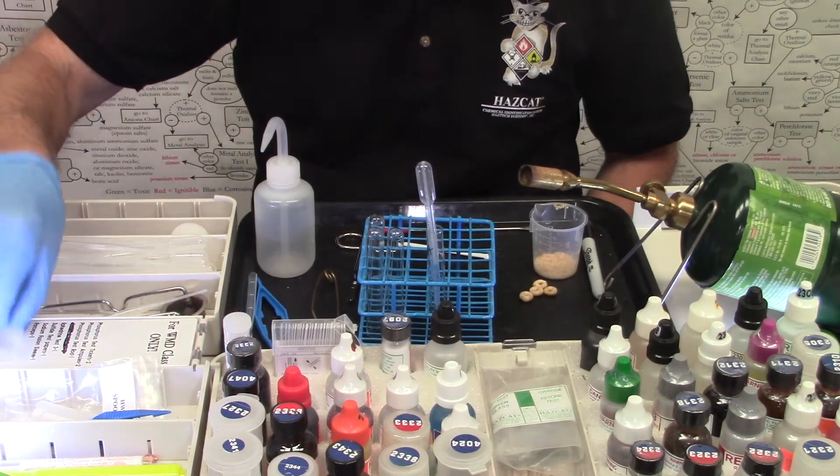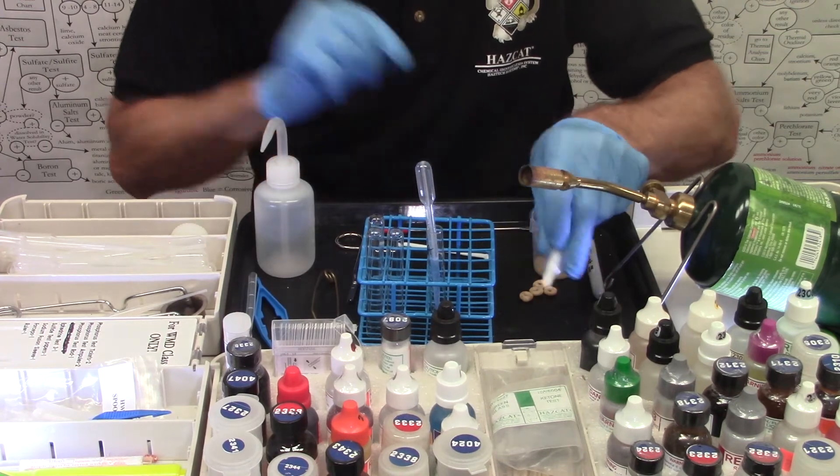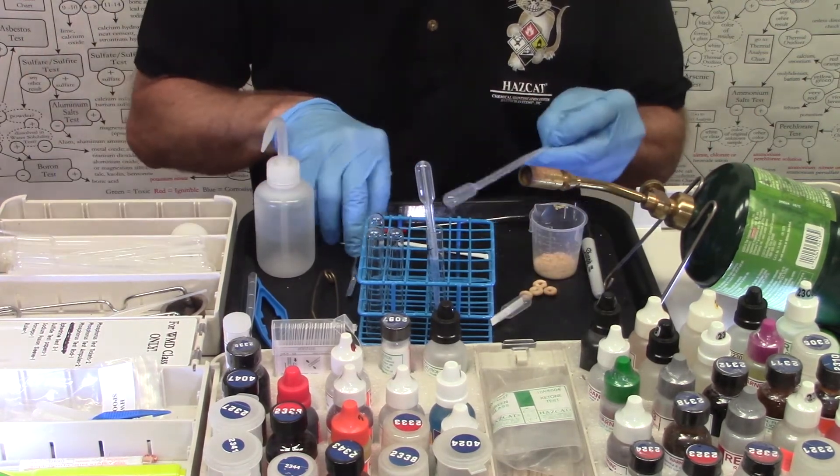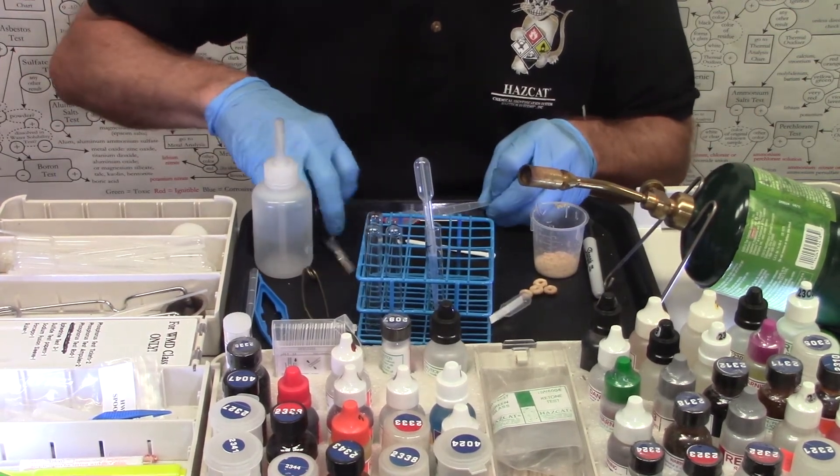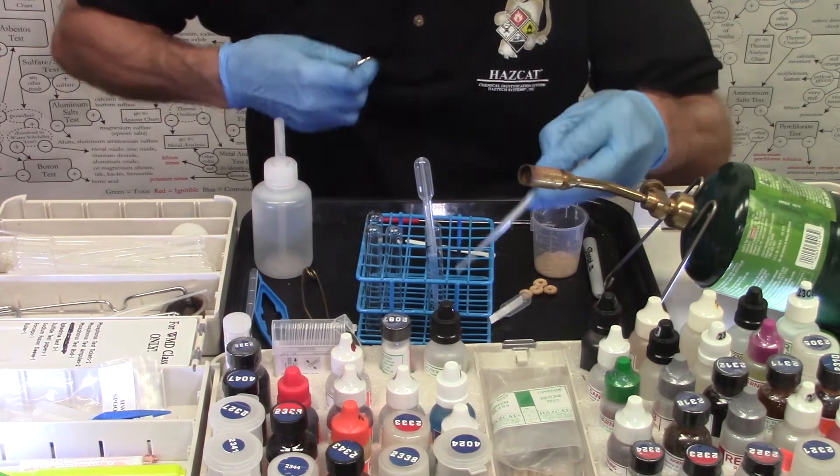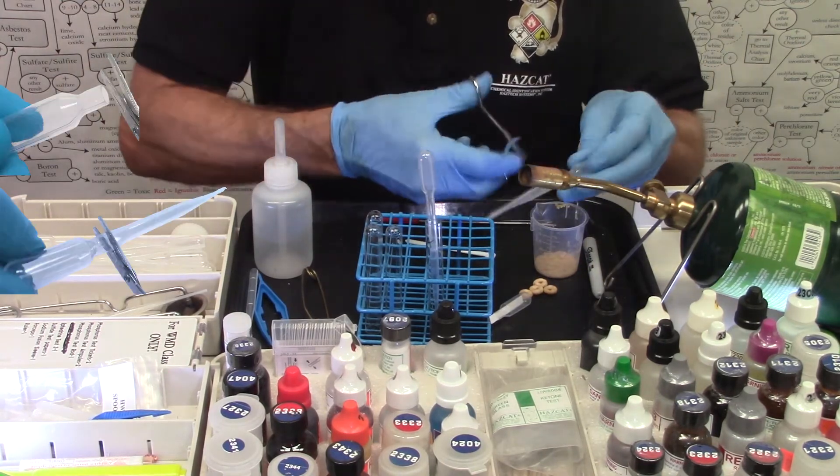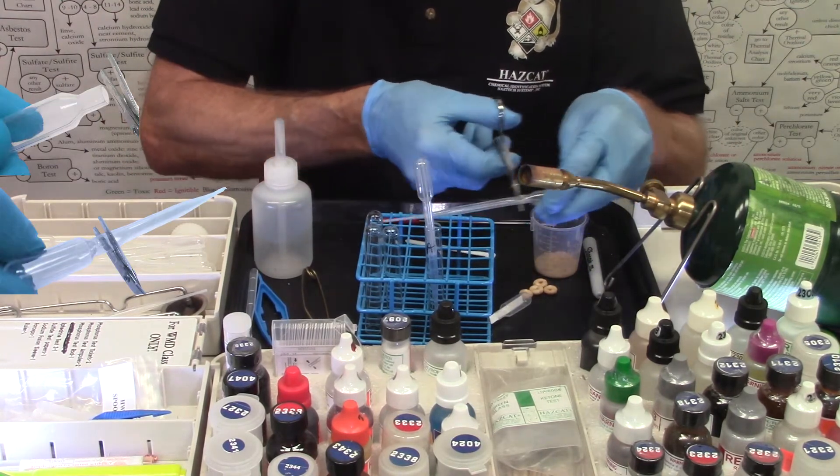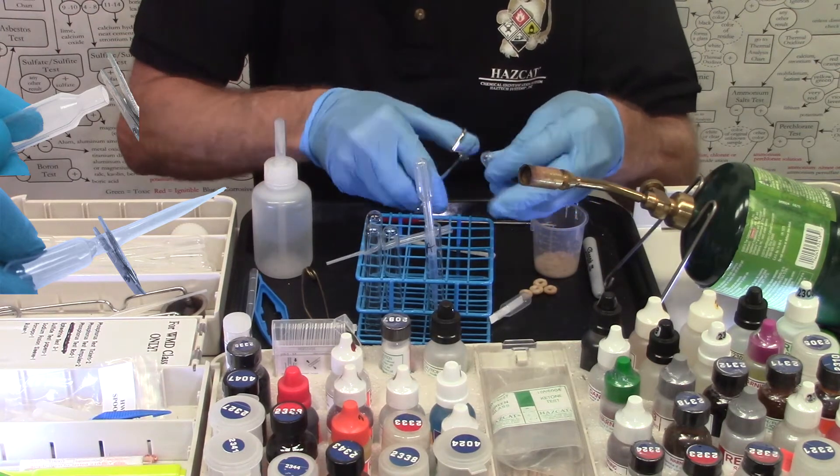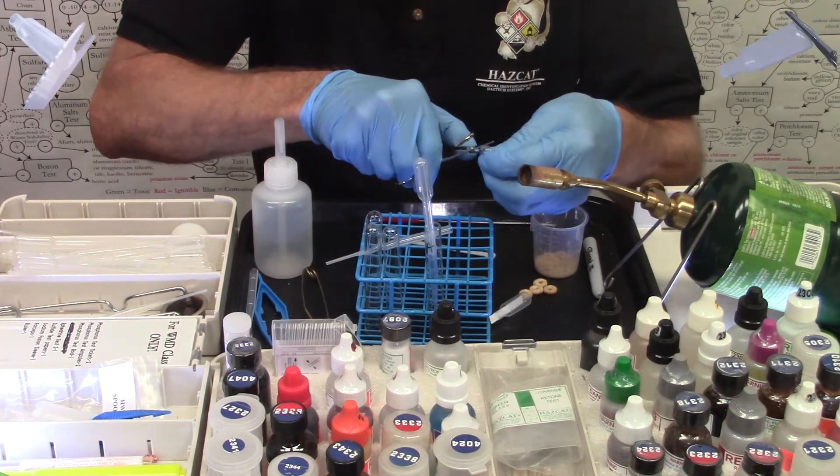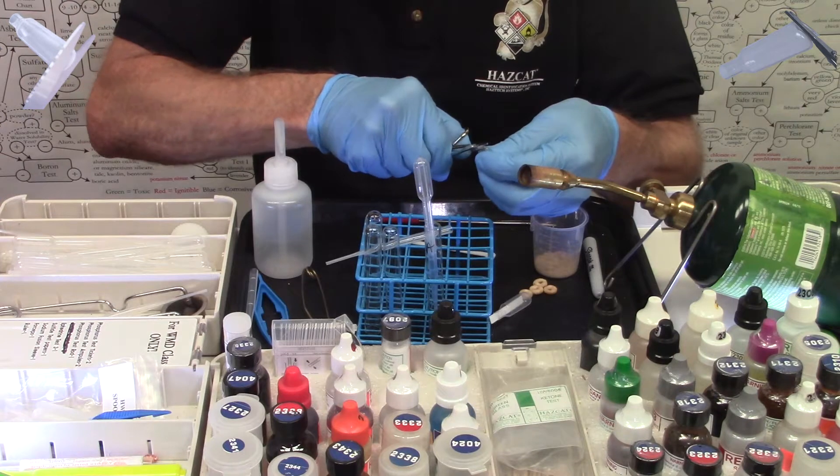Now we're going to prepare our gas collection bulb. It's going to look something like this. I made that by taking a pipette, cutting off the stem at the first graduation mark, cutting a small slit in the top, just enough for a gas to escape.